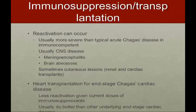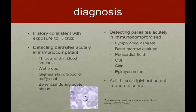In immunosuppressed or transplant patients, reactivation can occur. It's usually more severe than the typical acute Chagas disease in an immunocompetent patient. It usually manifests as CNS disease, and at times there are cutaneous lesions as well. This is a common finding in renal and cardiac transplant patients. Some patients who have end-stage cardiac disease do have a heart transplantation. Back when higher doses of immunosuppression were used, there was a lot of reactivation, but now with lower levels, there's less. These heart transplant patients actually do better than other heart transplant patients, mainly because Chagas disease affects their heart and they're not burdened with the comorbidities of other heart transplant patients.